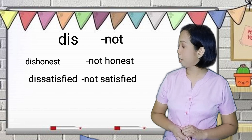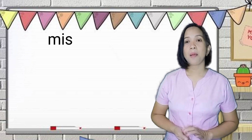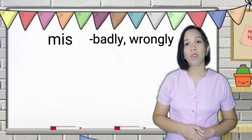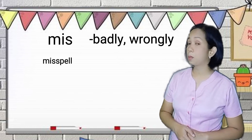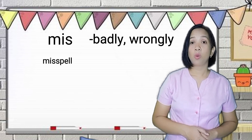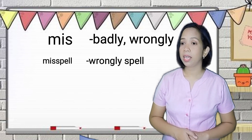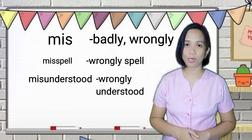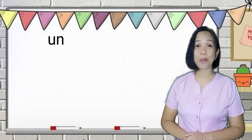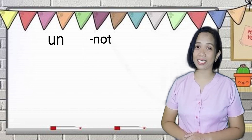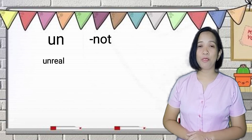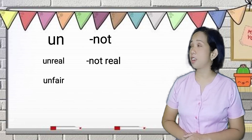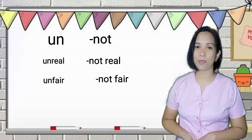Another prefix is mis. Mis means badly or wrongly. For example, misspelled, meaning wrongly spelled; and misunderstood, which means wrongly understood. Un is a prefix which also means not. For example, unreal, which means not real; unfair, which means not fair.